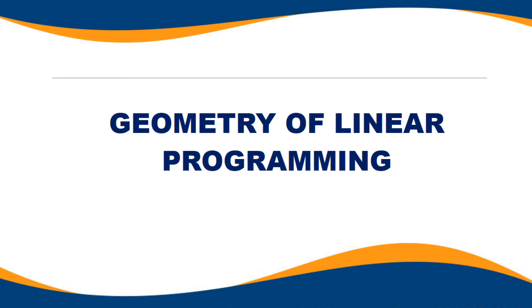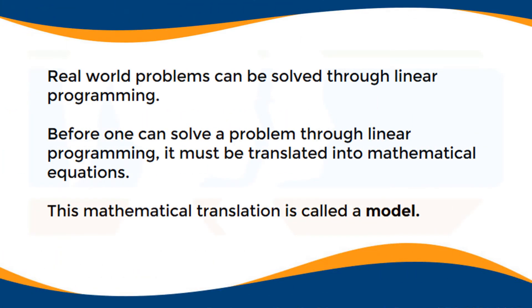This is called modeling. Real world problems can be solved through linear programming. Before one can solve a problem through linear programming, it must be translated into mathematical equations. This mathematical translation is called a model.